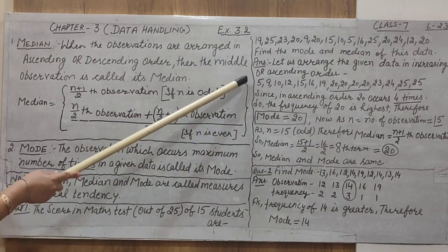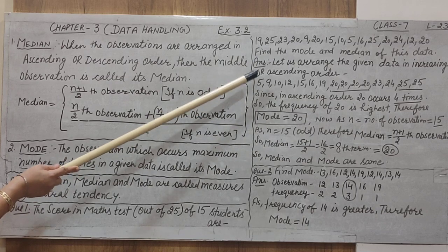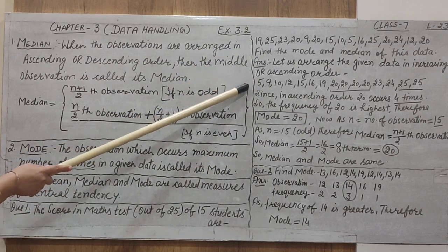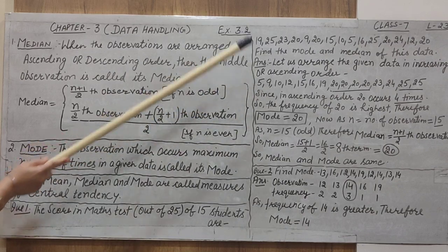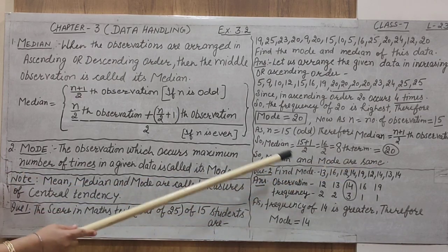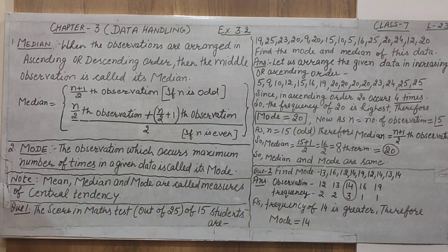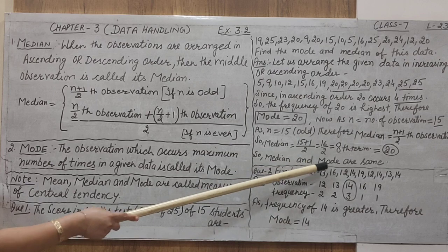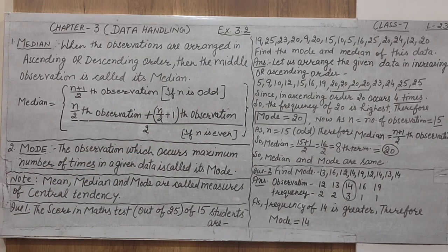When you count the number of observations, the data must already be arranged. Do not count from the given unordered data — first arrange the data, then count. We count from the ascending order, not the given data. The 8th term is 20, so the median is also 20. Here you observe that mode is 20 and median is also 20 — both are the same. That is not important; it may or may not happen — it depends upon the formula and the given data.